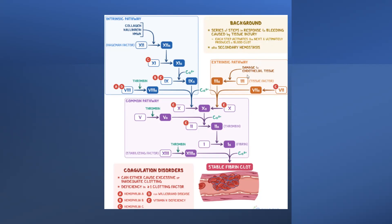In the extrinsic pathway, when there is damage to endothelial tissue, tissue factor (factor III) is activated to IIIa. Factor VII is also converted to VIIa. These combine and target the common pathway — intrinsic means inside the cell, extrinsic means outside the cell. They all converge on factor X, converting it to Xa.